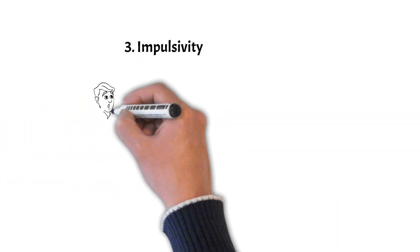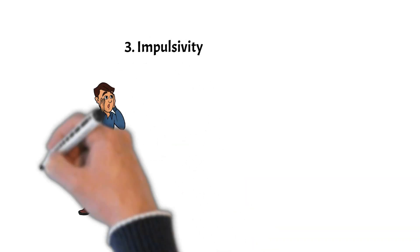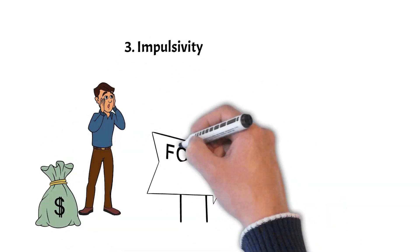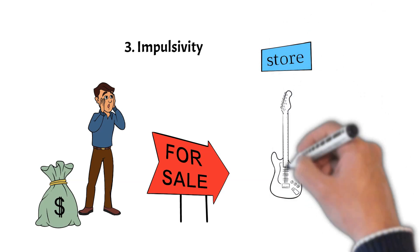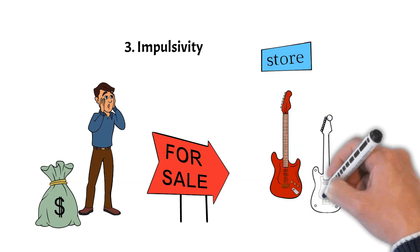3. Impulsivity. 7s can sometimes make decisions on a whim without thoroughly thinking them through, which could be challenging in relationships and difficult in teamwork scenarios.